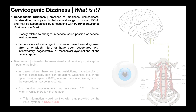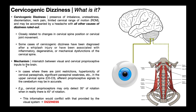The most accepted mechanism for cervicogenic dizziness is a mismatch between visual and cervical proprioceptive inputs to the brain. In cases where there are significant joint restrictions, hypertonicity of the cervical paraspinals — basically tightness or high tone — significant paraspinal weakness, and other related things, especially in the upper cervical spine, the afferent proprioceptive signals going to the brain, specifically the cerebellum, may be inaccurate.